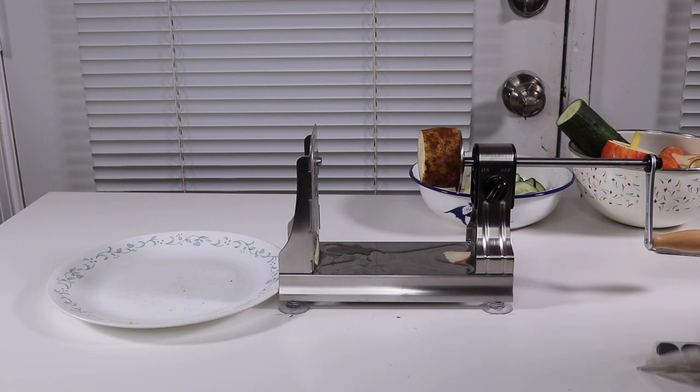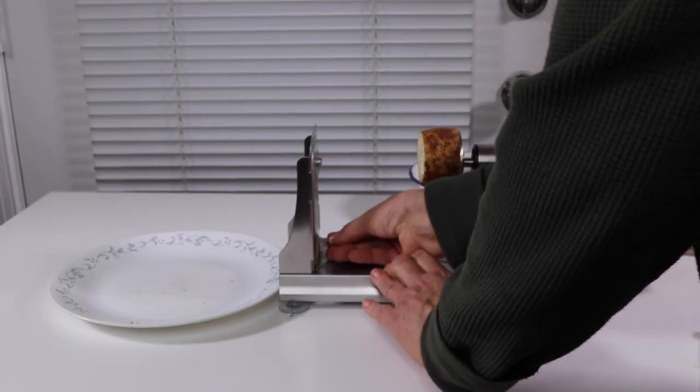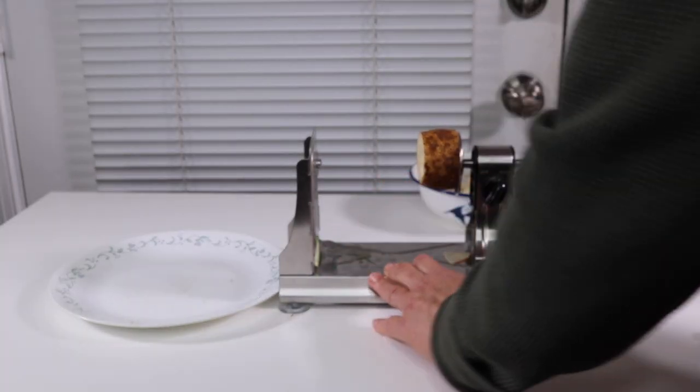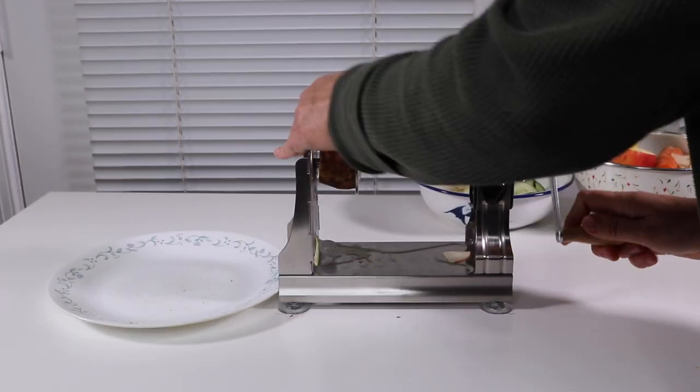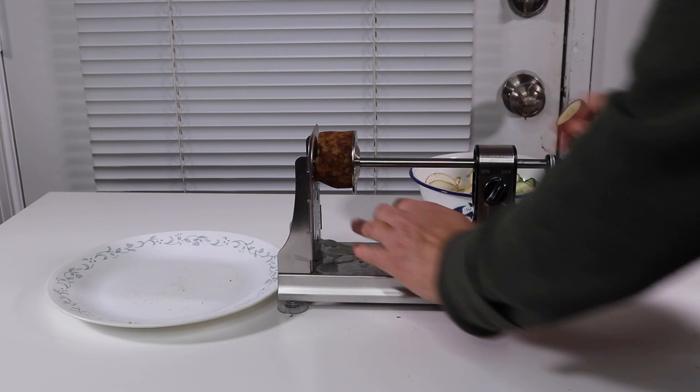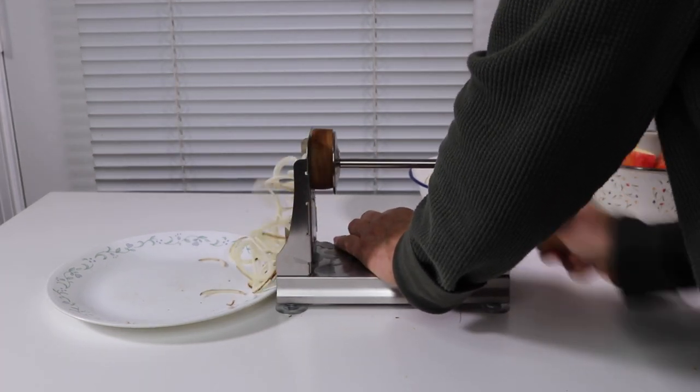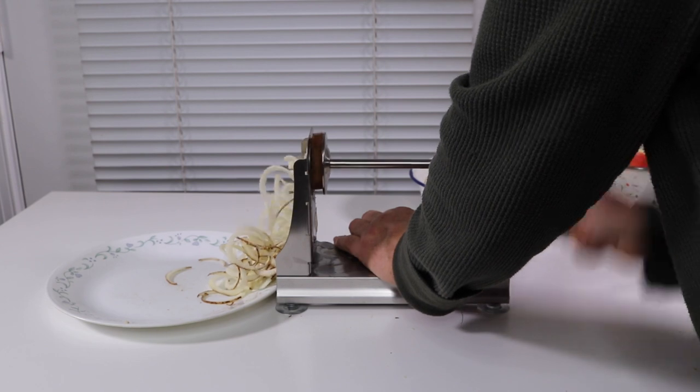See how fast that is. We take out this blade and let's get this one ready. The biggest one. We're going to make some curly fries. So curly fries. Here we go. This is the thickest cut that they have for the curly fries.